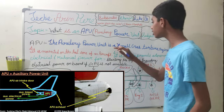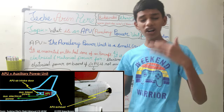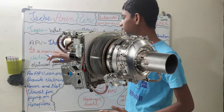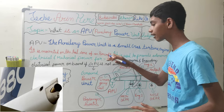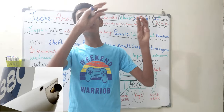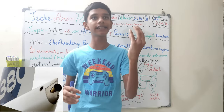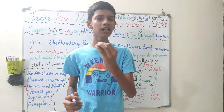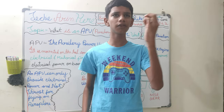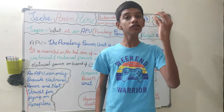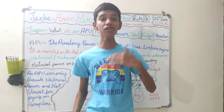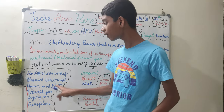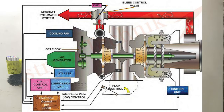The auxiliary power unit is a small gas turbine engine — a miniature version of an engine. It is mounted on the tail cone of an aircraft, at the extreme end. Sometimes you can see smoke or a blurry residue coming out from there — that comes from the APU. The APU is known as the third engine of the airplane, but note that it can only provide electrical power and not thrust.